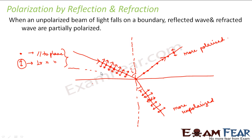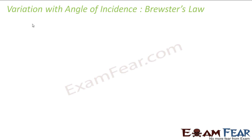If the angle of incidence is changed, the reflected ray becomes less polarized. It was found that there is a particular value of angle of incidence at which the reflected ray is maximum polarized. Below and above that value, both waves are partially polarized. So the bottom line is: when unpolarized light falls on a boundary, both the reflected wave and the refracted wave are partially polarized. The reflected wave is more polarized and the refracted wave is more unpolarized.